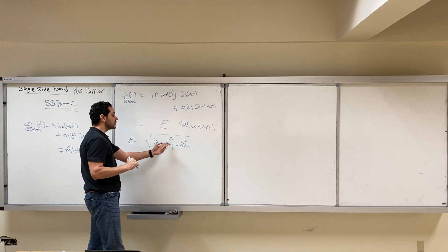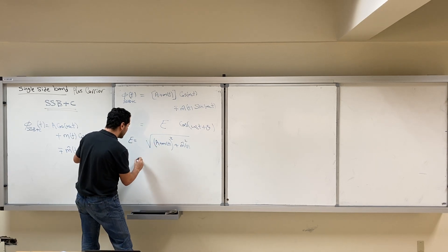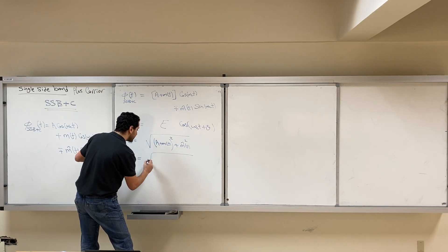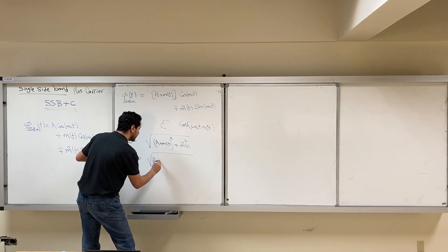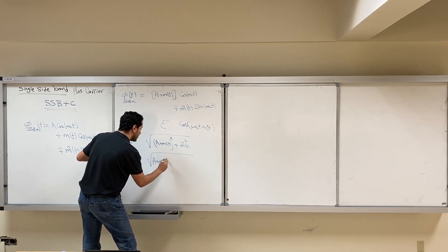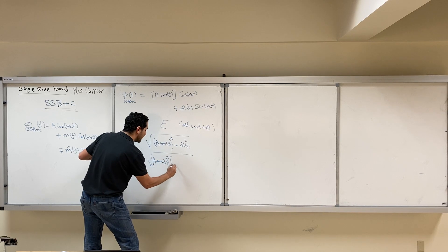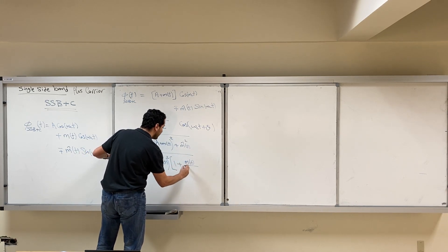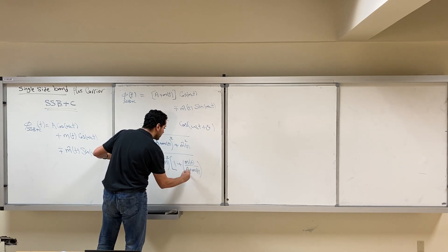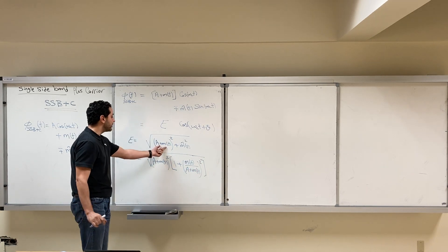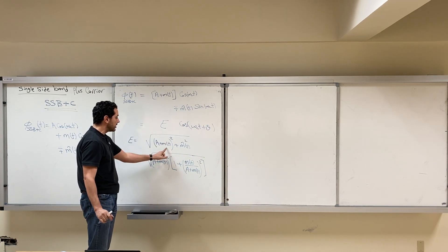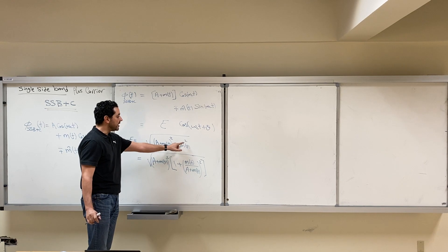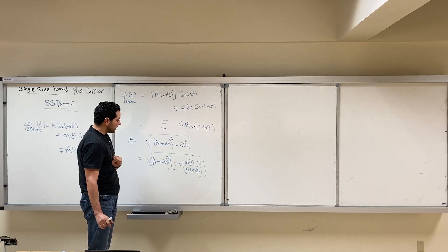Let's take [A + M(t)]² as a common factor. We get the square root of [A + M(t)]² multiplied by {1 + [M̂(t) / (A + M(t))]²}. If we take [A + M(t)]² as the common factor, the remaining term inside is 1 plus M̂(t) squared over [A + M(t)] squared.